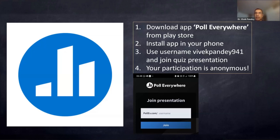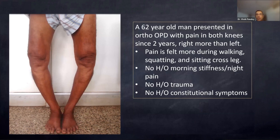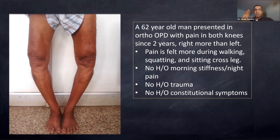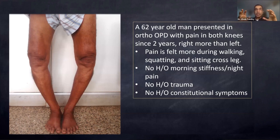Welcome to this session on arthritis. On the left is a clinical picture of a 62-year-old man presenting to the orthopedic OPD with pain in both knees for two years, with the right knee more affected. Now, an important concept: pain in orthopedics must be differentiated between mechanical pain — occurring on loading like standing, squatting, sitting, cross-legged, or walking — and rest pain.